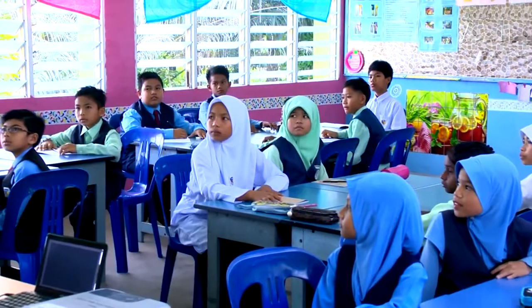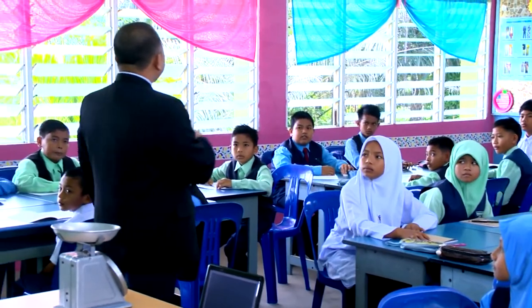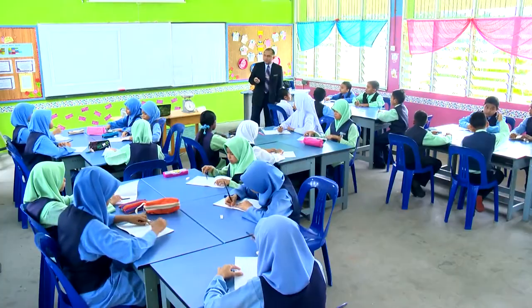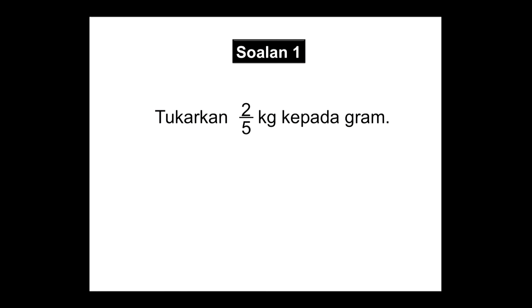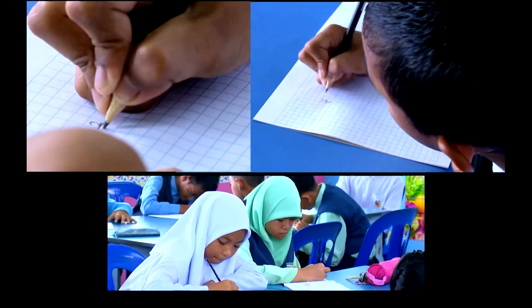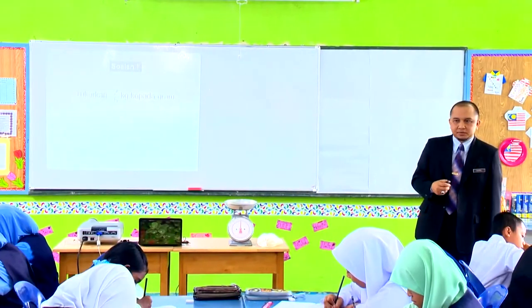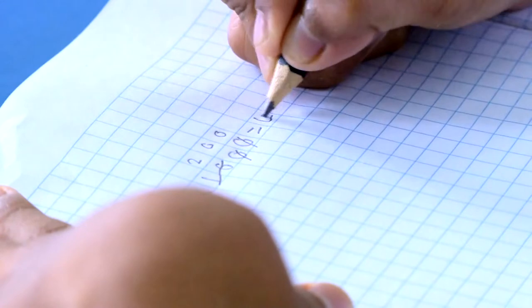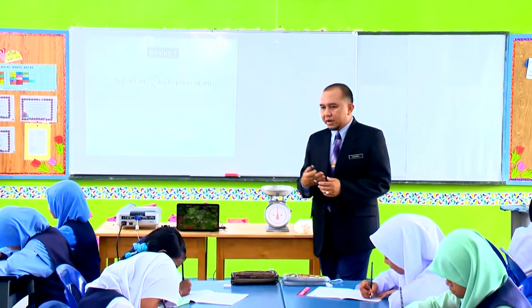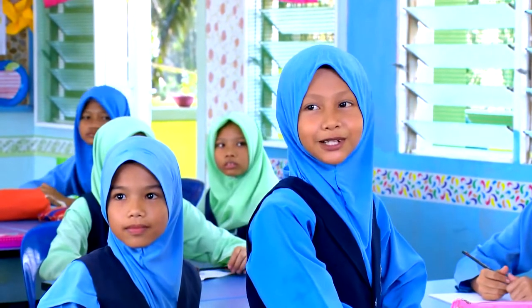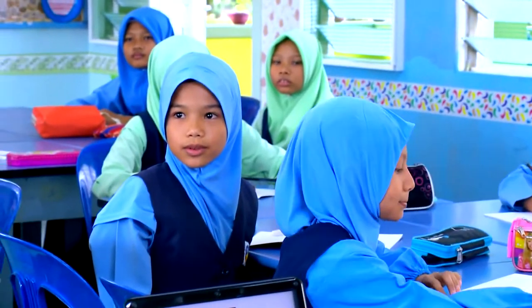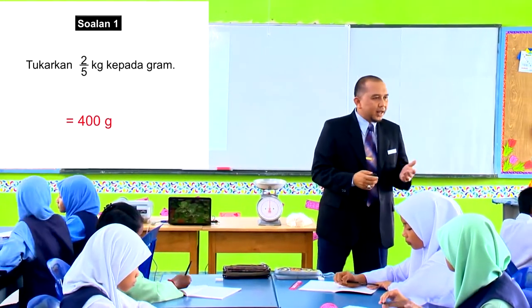Boleh faham? Baiklah kelas. Sekarang cikgu akan tunjukkan 3 soalan yang akan cikgu kemukakan. Cuba cari jawapan menggunakan kaedah pengiraan biasa. Keluarkan kertas, keluarkan buku. Sedia? Cuba tengok soalan yang pertama di hadapan. Tukarkan 2 per 5 kilogram kepada gram. Siapa yang selesai? Angkat tangan. Sarah, 400 gram cikgu. 400 gram, betul. Terima kasih Masyarah.